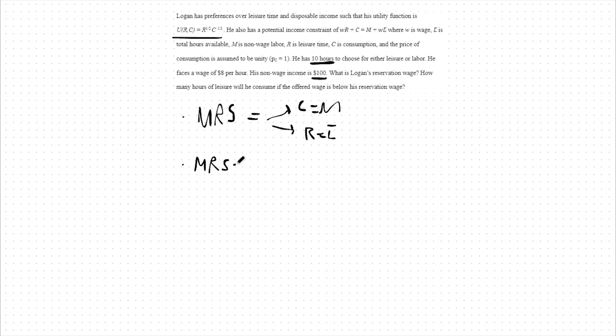So, our marginal rate of substitution will be the marginal utility of R over the marginal utility of C, which is one half R to the negative one half times C to the one half over one half R to the one half C to the negative one half.